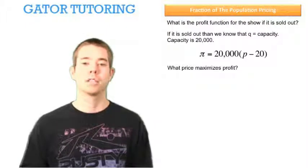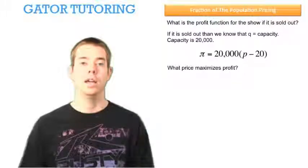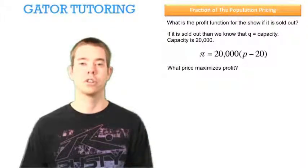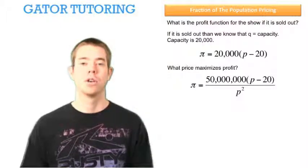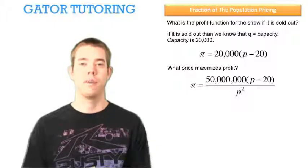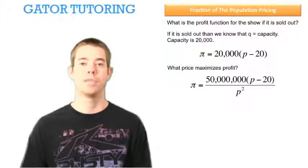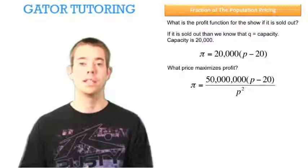What price maximizes profit is our final question. Well, first we need to go back to our original profit function and make sure to check our constraint, our capacity constraint. So our profit function was this. We can rearrange this a little bit because mathematically it's going to be easier if we have that P squared out of the denominator and into the numerator. And anytime we want to do that, we've got to change the sign on the exponent.